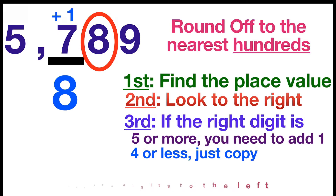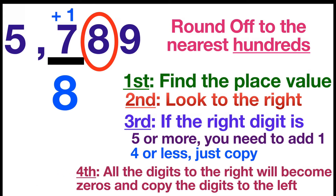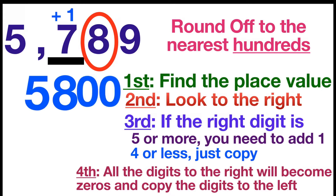Lastly, our last step is: all the digits to the right will become zeros. Since we have two digits to the right, we will write two zeros. Then copy the digits to the left — we will just copy digit 5. So the answer is 5,800.